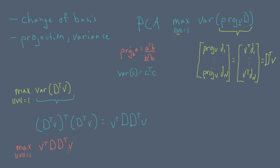So v transpose d d transpose v is known as a quadratic form because the matrix d d transpose is symmetric, meaning it is equivalent to its transpose. A symmetric matrix also has the property that it is square and it is symmetric across its diagonal.